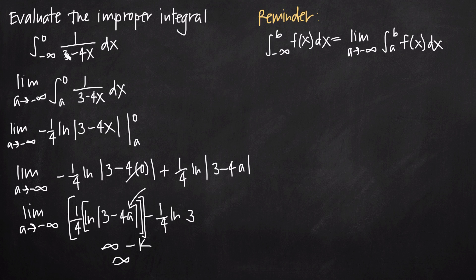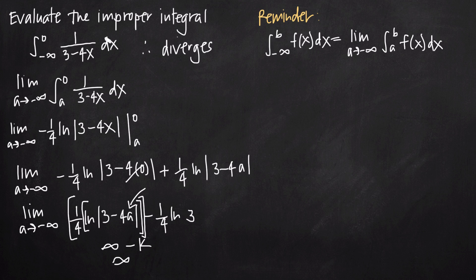Since we get an infinite value, we know that our function on the limits negative infinity to 0 diverges. When we get a positive or negative infinite value at the end, the function diverges on the interval. If we get a real number answer, then we say it converges to that value. But in this case, because the limit as a approached negative infinity was positive infinity, this improper integral diverges.